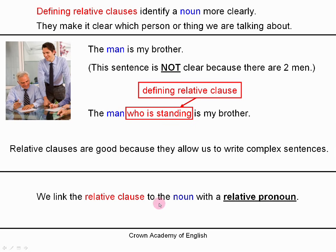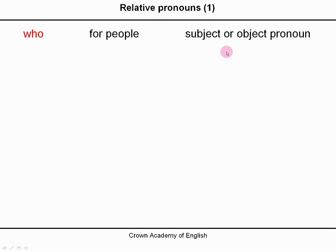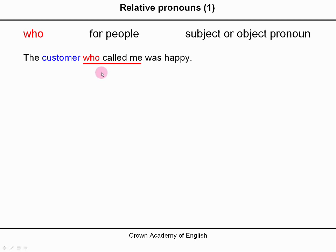So the relative pronoun 'who' — we use it for people, and it can be the subject or the object pronoun. Example: 'The customer who called me was happy.' So 'who called me' is the relative clause, and 'who' is the relative pronoun. In this sentence 'who' is the subject pronoun, because 'who' is representing the customer, and the customer called me. So it is the subject.